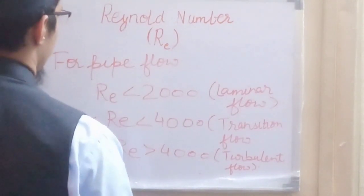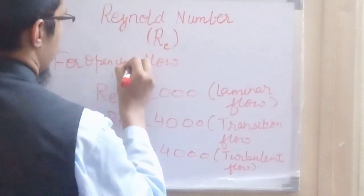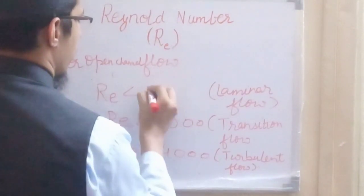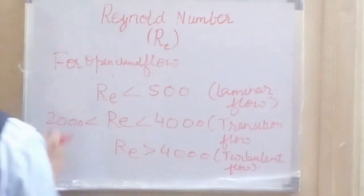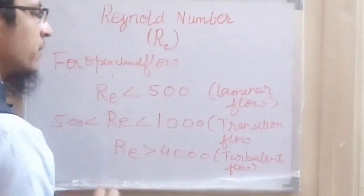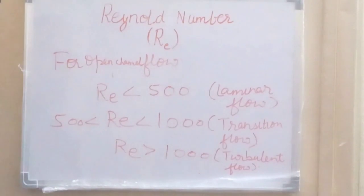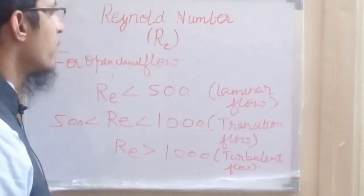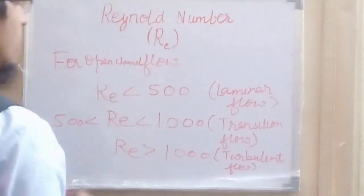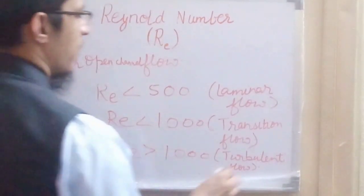Similarly for open channel flow, a Reynolds number less than 500 represents laminar flow; between 500 and 1000 it represents transition flow; and greater than 1000 represents turbulent flow. In case of free fall, Reynolds number less than one is considered laminar, otherwise it is in transition or turbulent. In case of flow between parallel plates, Reynolds number less than 500 is considered as laminar flow.